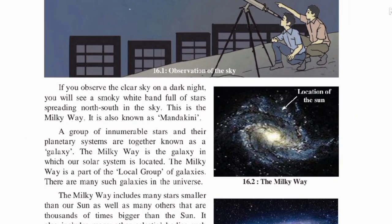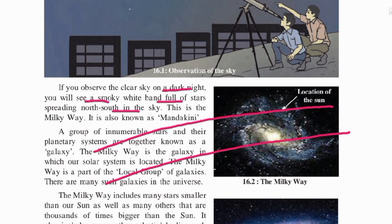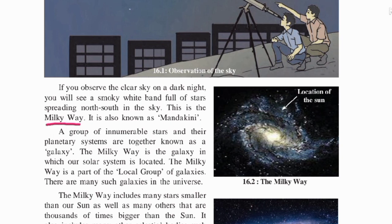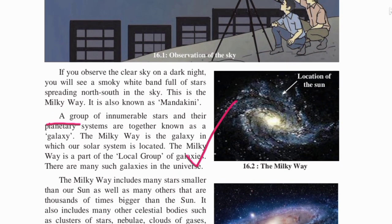If you observe the clear sky on a dark night, you will see a smoky white band full of stars spreading north to south in the sky. This is the Milky Way — that is what you see in that picture. This is our galaxy, called the Milky Way.